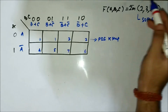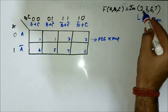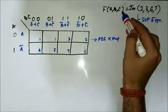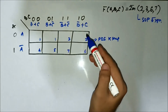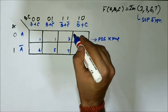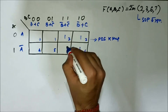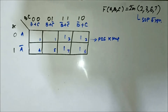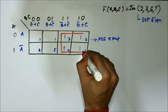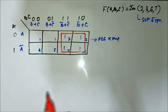We will first map the K-map according to the minterm values. The minterm values are 2, 3, 6, and 7 — a three-variable expression. We map 2, then 3, then 6, then 7, and as you can see, we can form a quad involving these adjacent cells.